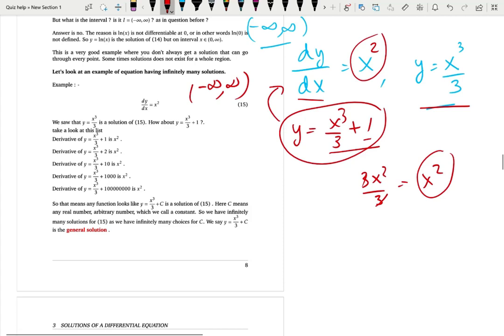Okay, how about x cube over 3 plus 2 then? That is also a solution, right? Because the derivative of 2 is 0, you eventually get the derivative of this function as x square, right? So the left hand side and the right hand side is the same.